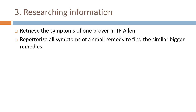It has been possible to research information in a way that was never possible before so easily. For example, if you want to retrieve all the symptoms of one prover of a remedy in Allen, you can. Or if you want to find out the characteristics of a small remedy, you can repertorize the 300, 500, or 700 symptoms of that remedy and understand which bigger remedy is similar to the one you have not been prescribing so far.